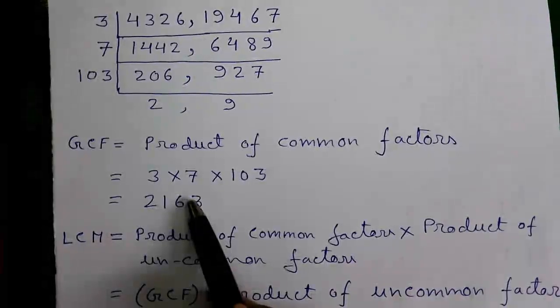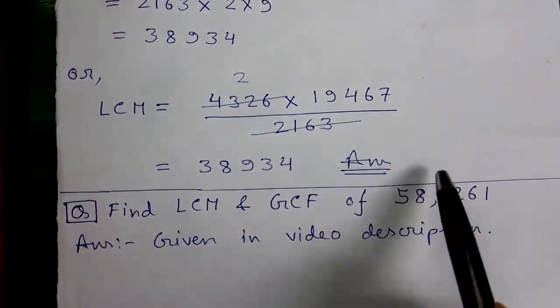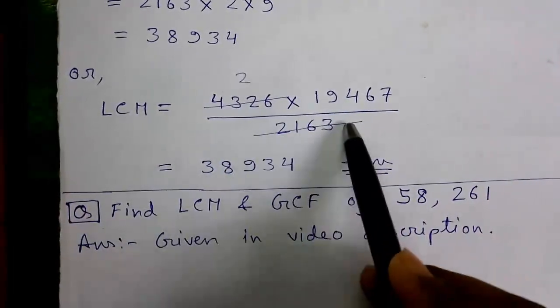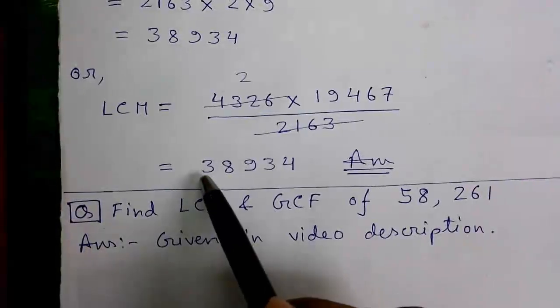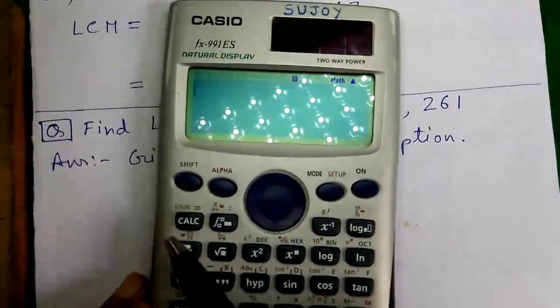So our GCF is 2163. And now we will find out the LCM which is product of the two numbers divided by their GCF. So that is equals to 38934. So let's do it.